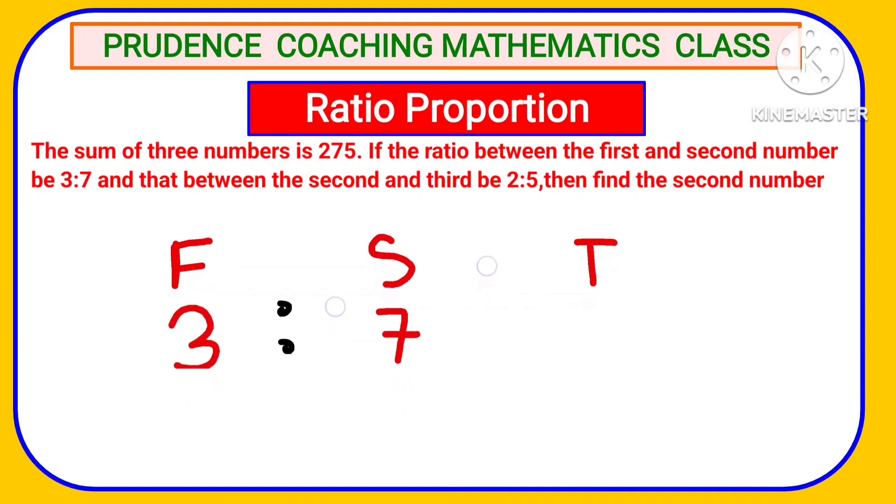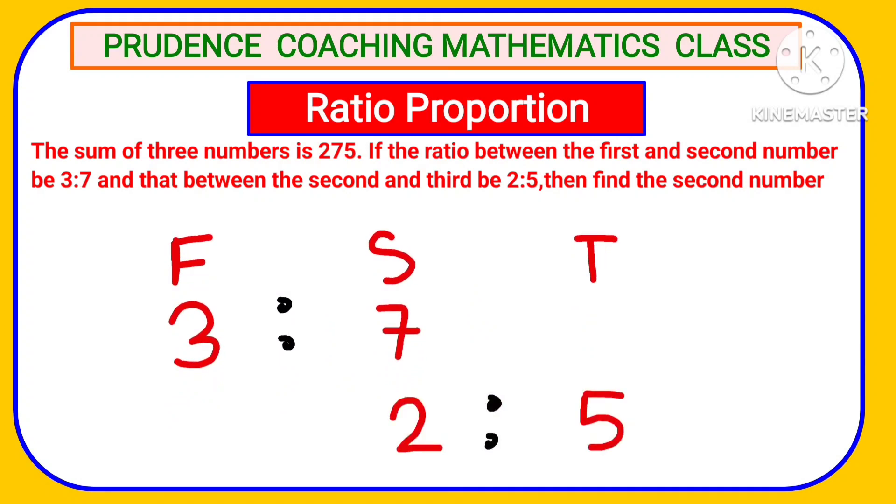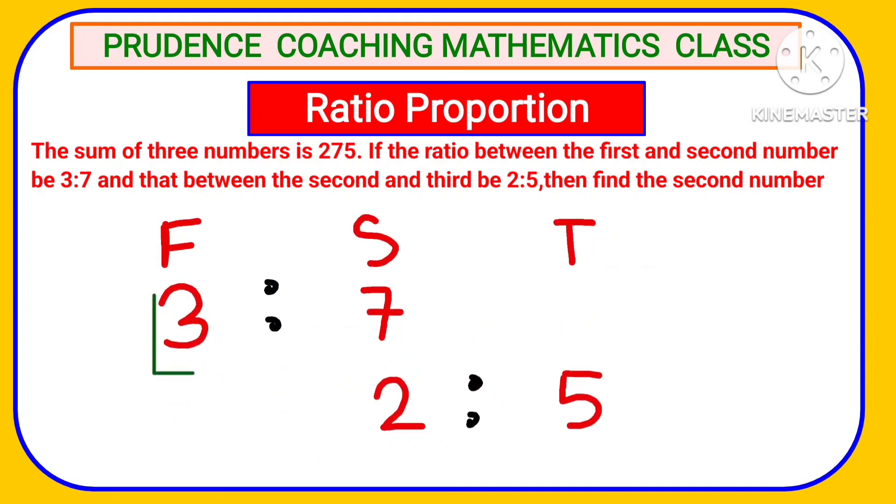And that between the second and third number is 2 is to 5. The ratio between second number and third number is 2 is to 5. Then find the second number. You are asked to find out the second number.